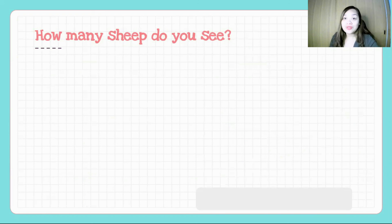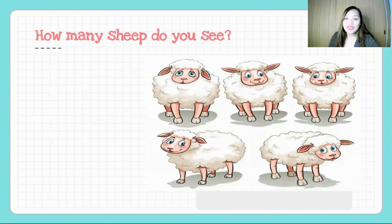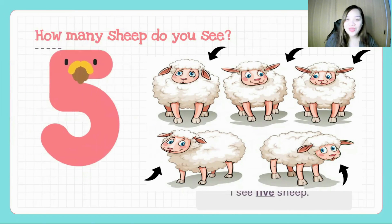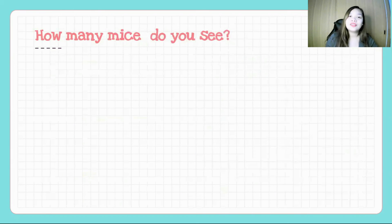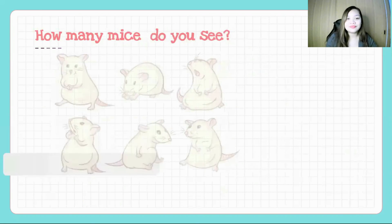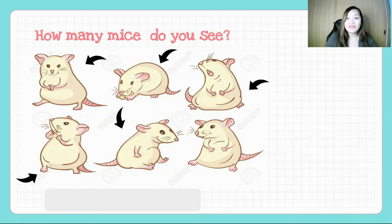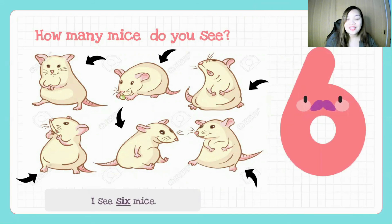How many sheep do you see? Let's try to count them. One, two, three, four, five. How many do you see? I see five sheep. Next — how many mice do you see? Let's try to count them. One, two, three, four, five, six. How many mice do you see? I see six mice.